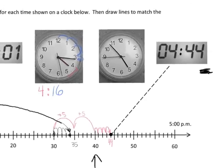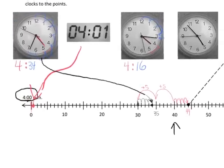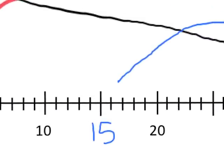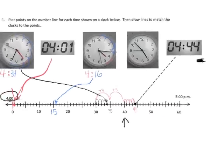So now we have to label that on our number line. I'm going to zoom in right around here because here's 4:10, and we know that this line would be 4:15. So 4:16 means we would need to go one extra minute over — so it's going to be right there. And that's 4:16.